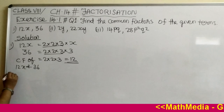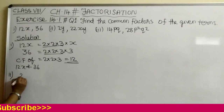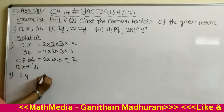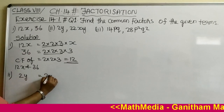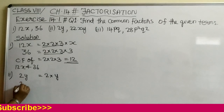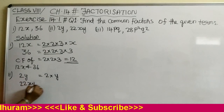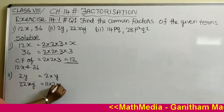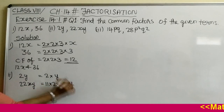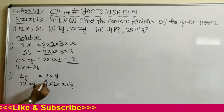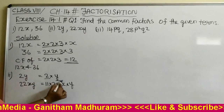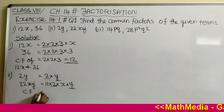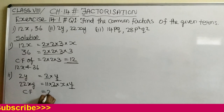Now we can go to the second question. The factors of 2y are 2 and y only. Next, 22xy can be written as 11 into 2 into x into y. Now we can find the common factors: 2 is common, and y is also common. So the common factors of 2y and 22xy are 2y.